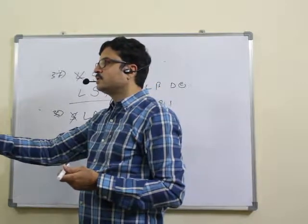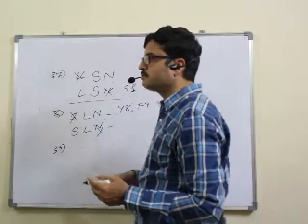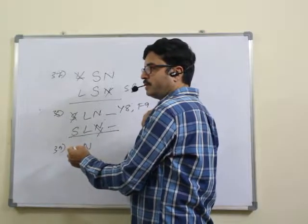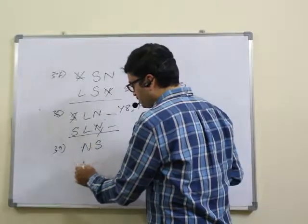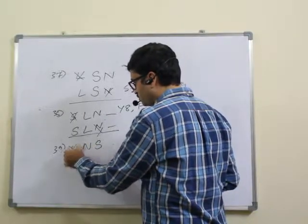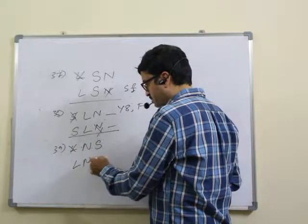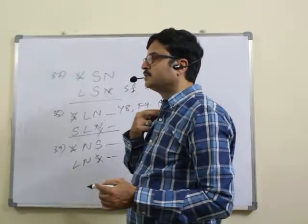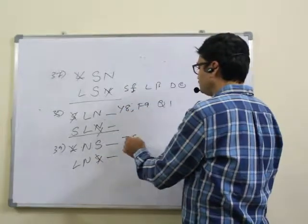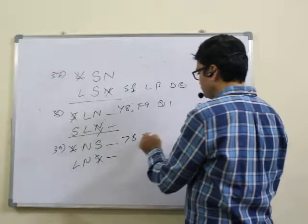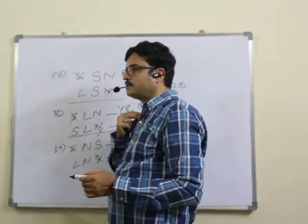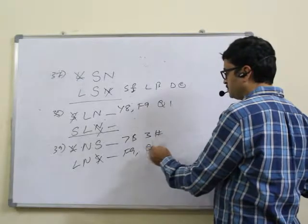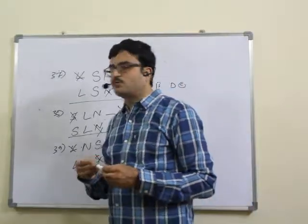Question 40: how many such numbers are there which are either immediately followed by a symbol or preceded by a letter, but not both? For number-symbol: dollar 7, three-hash. For letter-number: F9 and Q1. Total four qualify. Answer: 40, second option.